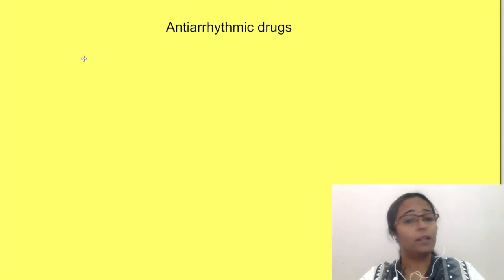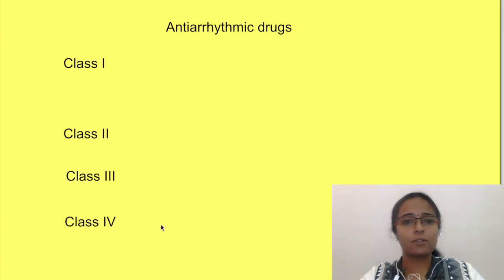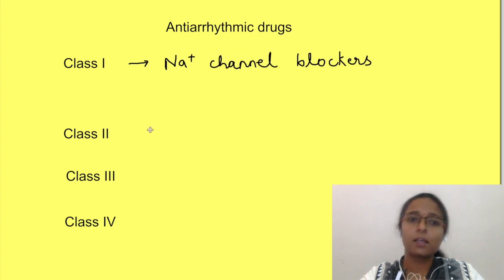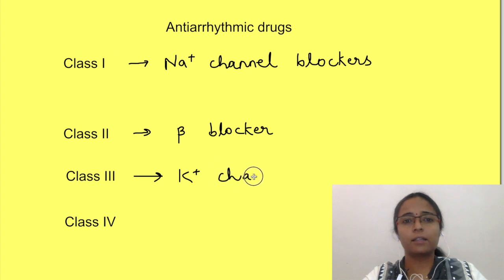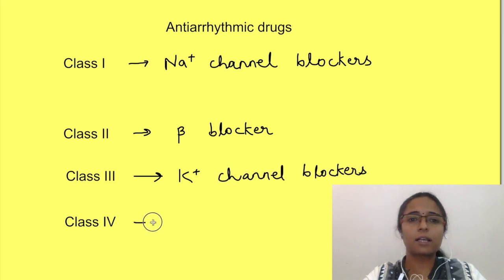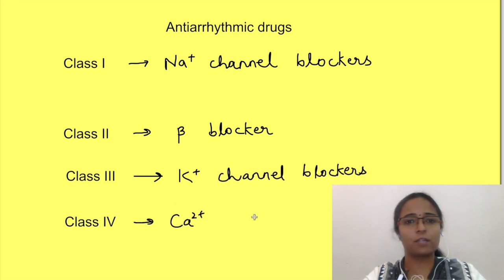There are four classes of antiarrhythmic drugs. Class 1 drugs block sodium channels, class 2 are beta blockers, class 3 are potassium channel blockers, and class 4 drugs are calcium channel blockers.